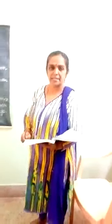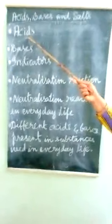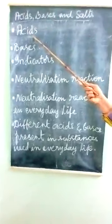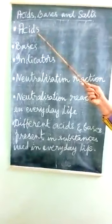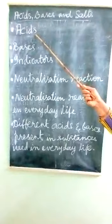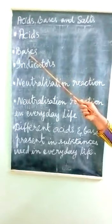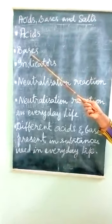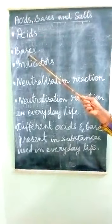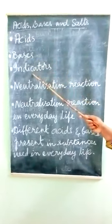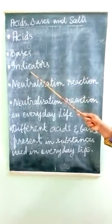Now let's summarize the lesson on acids, bases, and salts. Acids are substances that are sour in taste and contain hydrogen positive ions. Bases are substances that are bitter in taste and contain hydroxyl (OH⁻) ions.